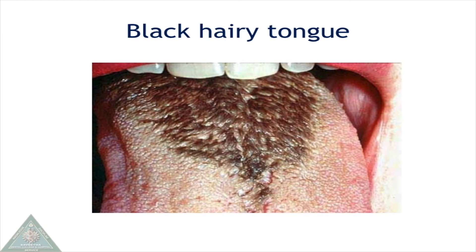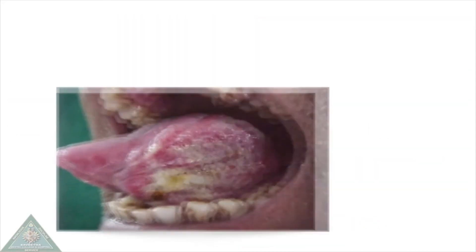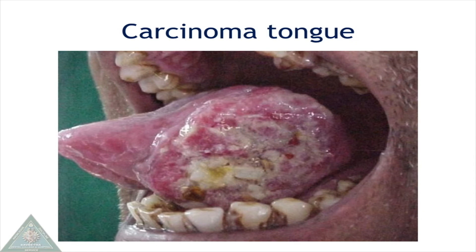The color of black hairy tongue is due to the action of pigment-producing bacteria. Carcinoma of the tongue appears as an ulceroproliferative lesion that is often indurated and is often found in the lateral borders of the tongue.